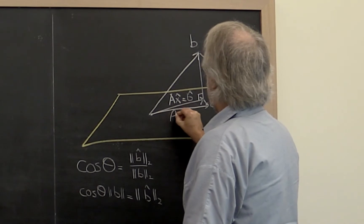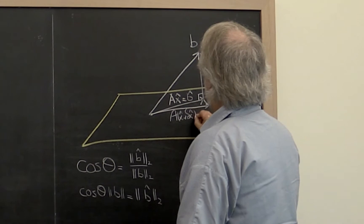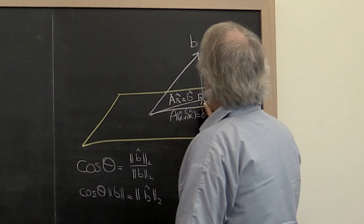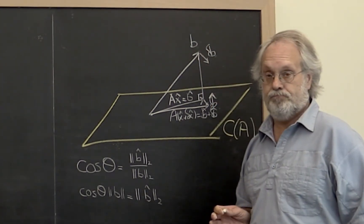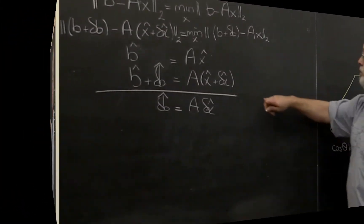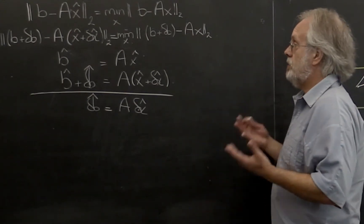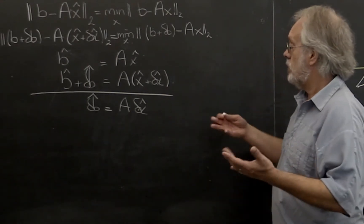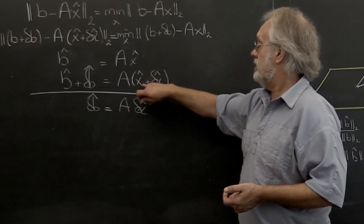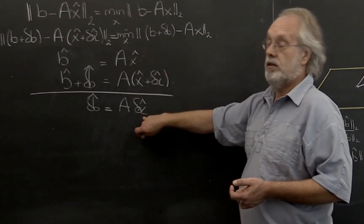What we're looking for is x̂ + δx̂ that satisfies b̂ + δb̂. That's what we have written down here. And just like when we looked at the conditioning of the linear system Ax = b, we can subtract one equation from the other to get this result here.